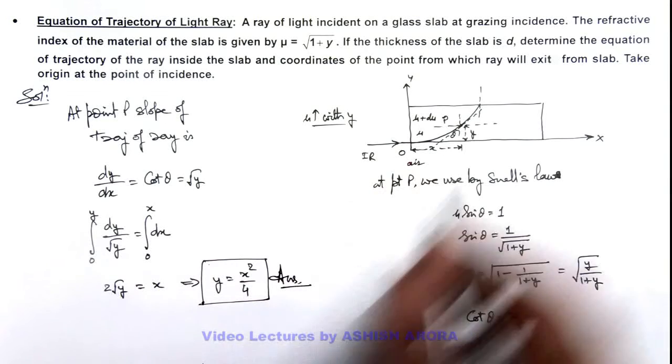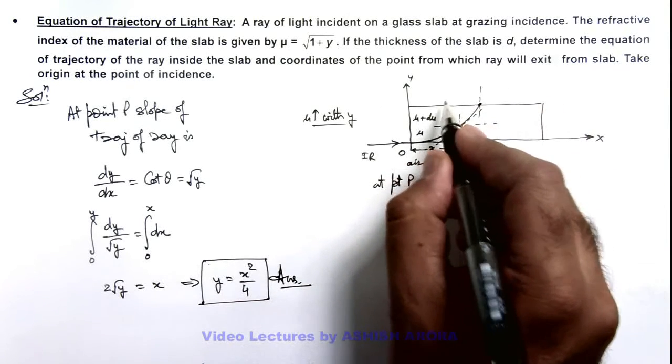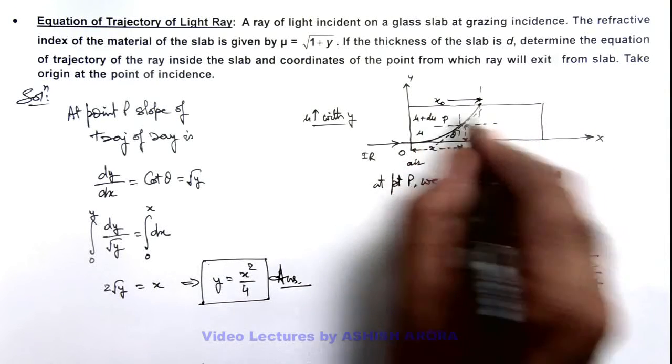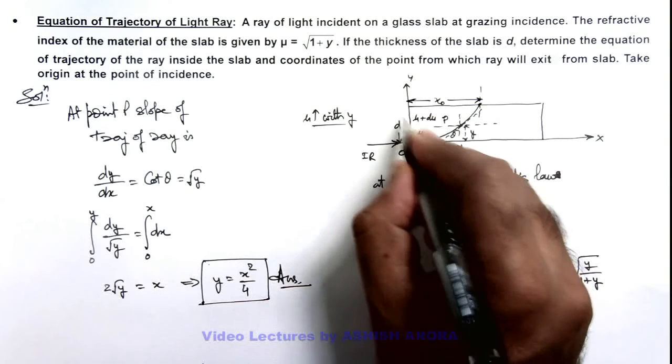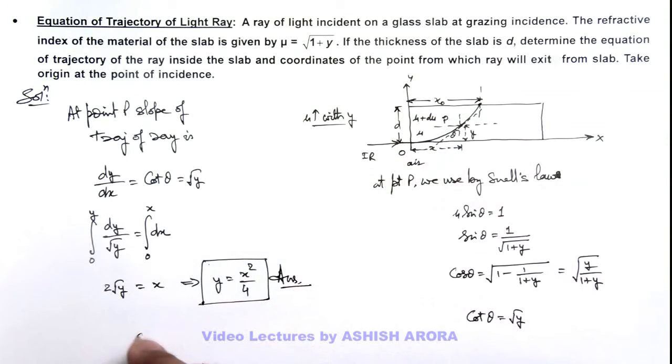We are also required to find the position on glass slab where the light ray will exit. The light ray will exit at a distance x₀ from y-axis, where y can be taken as d because the slab is of width d. So we can write at y = d, the value of x we are getting is √(4d). So this will be 2√d. This is another result of this problem.